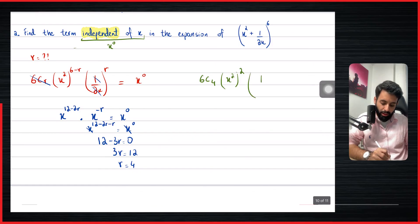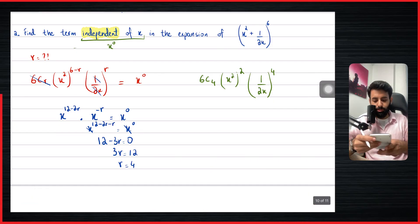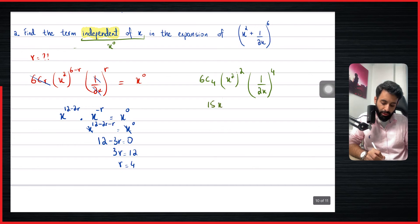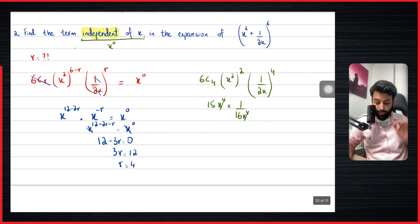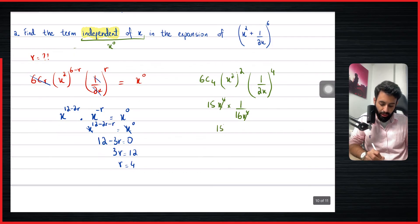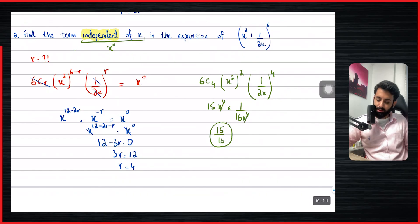Substituting r = 4: 6C4 · (x²)^(6−4) · (1/2x)^4, which is 6C4 · x^4 · (1/16x^4). Since 6C4 = 15, we get 15 · x^4 · (1/16x^4). The x^4 in the numerator and x^4 in the denominator cancel — as expected, because our r is correct — and we are left with 15/16. This is the term independent of x.